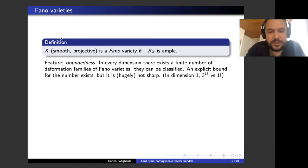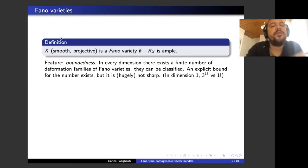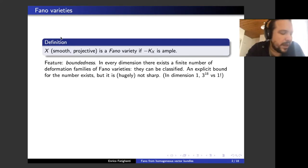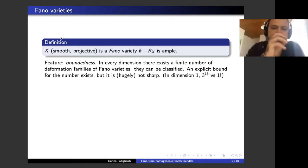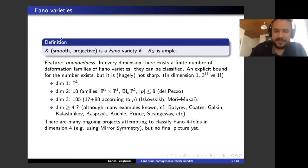One important feature about Fano varieties is their boundedness: in any dimension, you have a finite number of deformation families of Fano varieties. This means that, at least in theory, you can classify Fano varieties. If you're looking for an explicit bound for this number of families in each dimension, it exists, but it's hugely not sharp. For example, if you plug in dimension equal to one, you get that you have at most 3^18 families of Fano varieties, whereas there is only one smooth Fano variety in dimension one, which is P1.